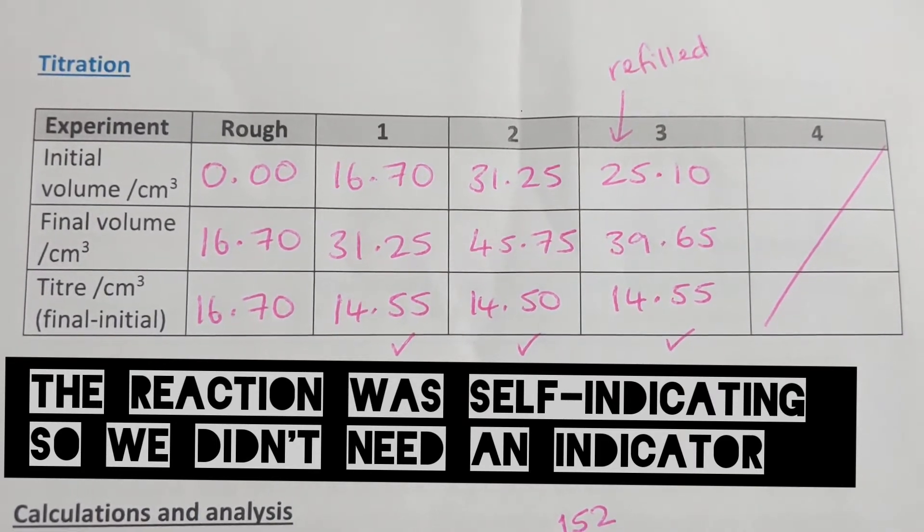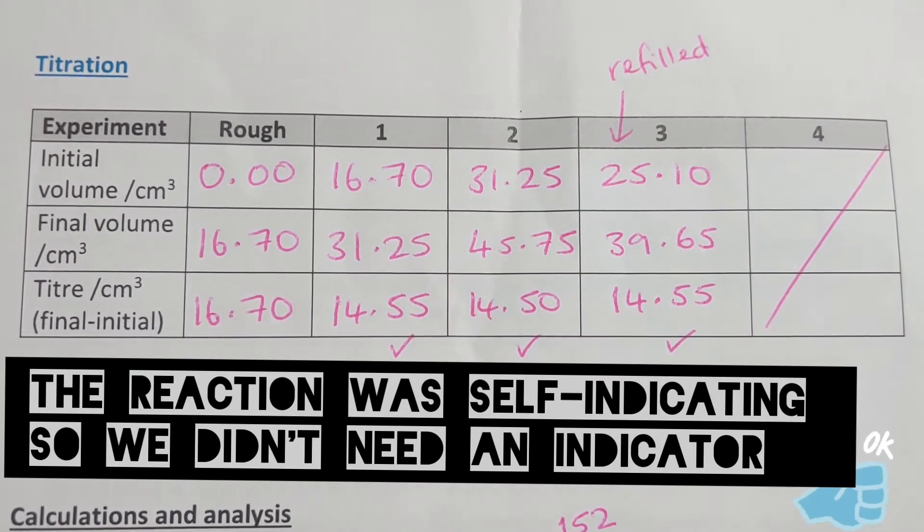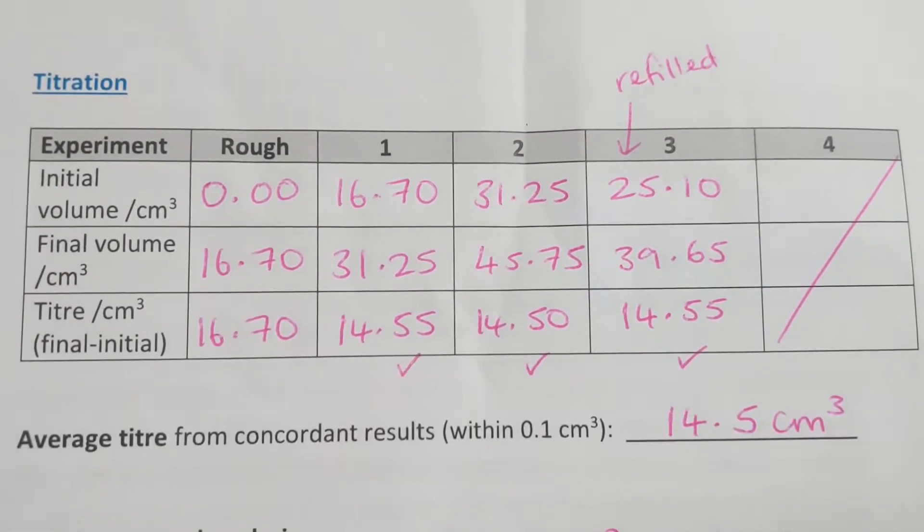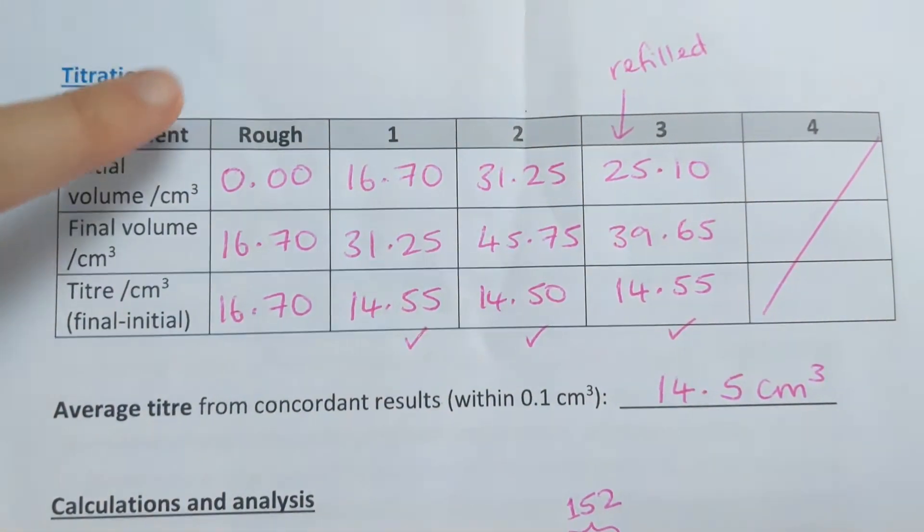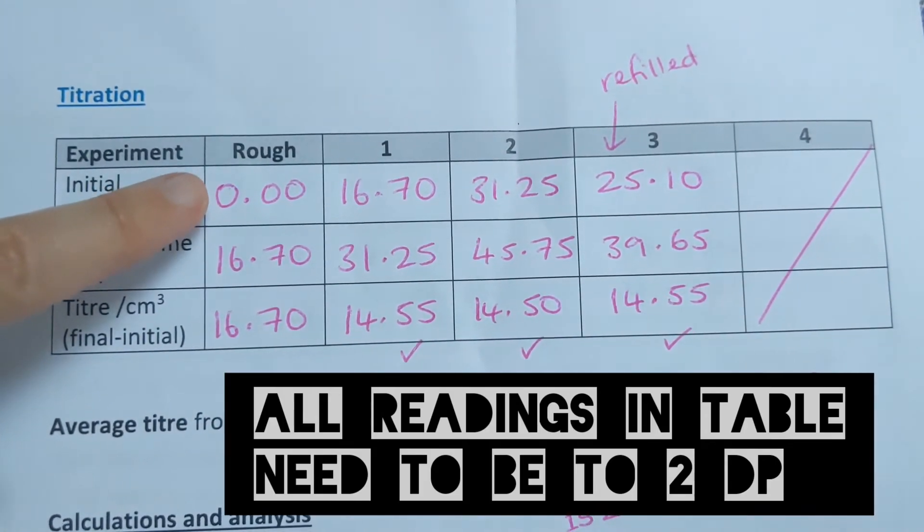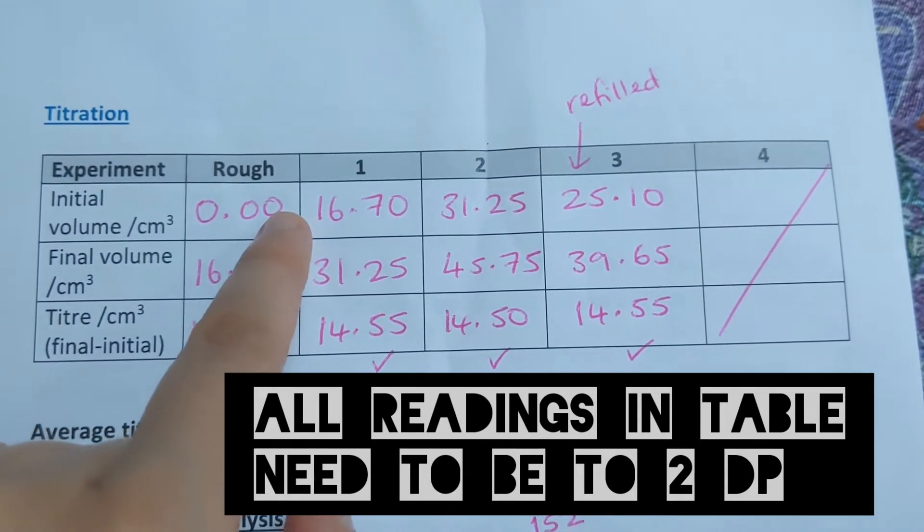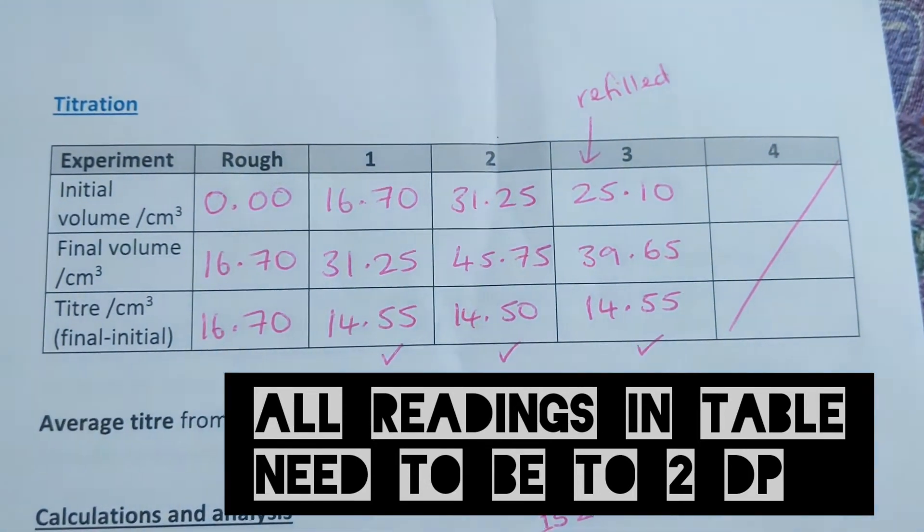At the top we have our initial burette readings to two decimal places, and each of these volume readings has to end in a zero or a five because a burette can only read to the nearest 0.05.